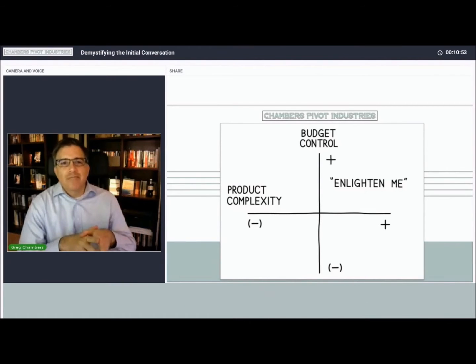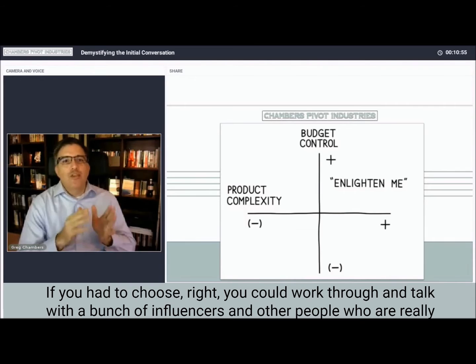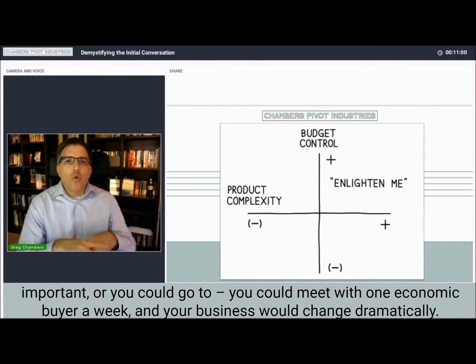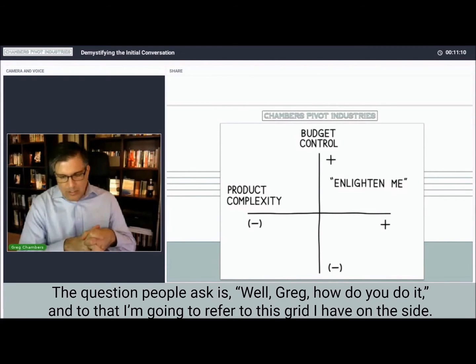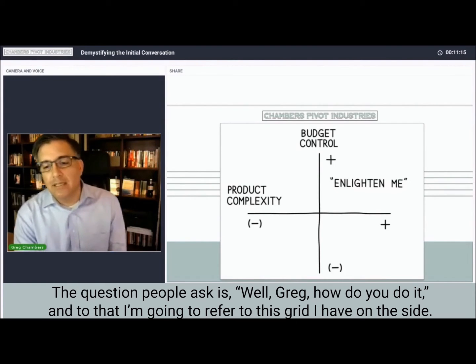If you had to choose, you could work through and talk with a bunch of influencers and other people who are really important, or you could meet with one economic buyer a week and your business would change dramatically. So the question people ask is, well Greg, how do you do it? To that, I'm going to refer to this grid I have on the side.